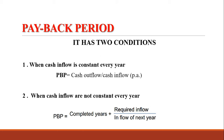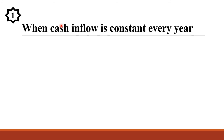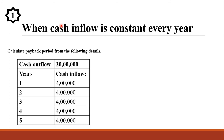Let us see how to solve payback period problem sums. Problem number 1 is when cash inflow is constant every year. Calculate the payback period from the following details: cash outflow is 20 lakhs, number of years is 5, and the cash inflow is rupees 4 lakhs per annum. As you can see, every year it generates rupees 4 lakhs — the cash inflow is constant every year.